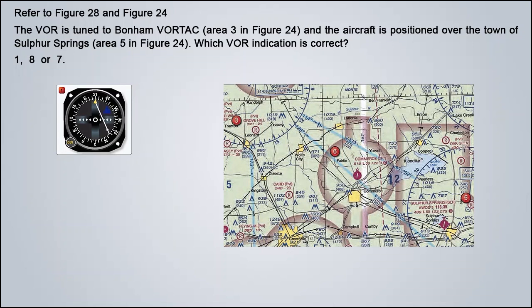Let's start with VOR number 1. First, we look at the flag — it points straight up. Second, we look at the needle, which is only slightly deflected towards the right, about two dots. This means we are very close to the 210 bearing to the station. To be precise, we are on the 214 bearing to, or 034 radial from, the station. One dot deflection of the needle is 2 degrees; two dots is 4 degrees. And because the needle is to the right, or west of center, it points towards the west.